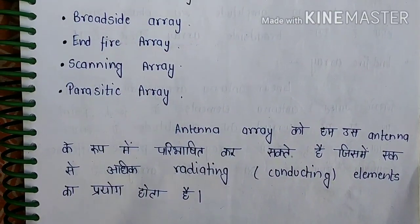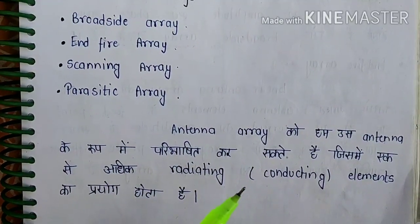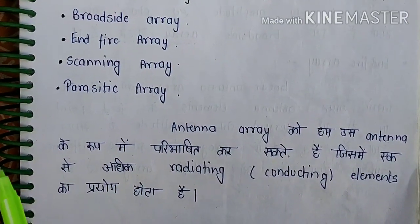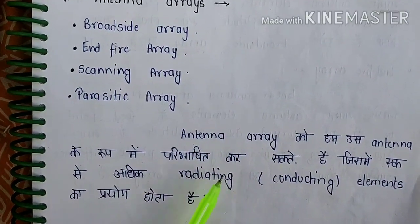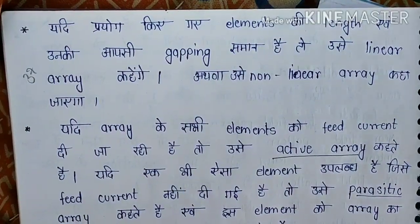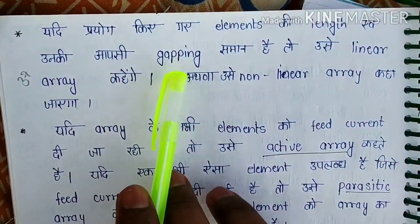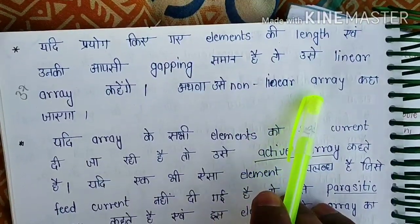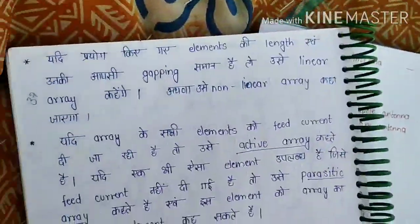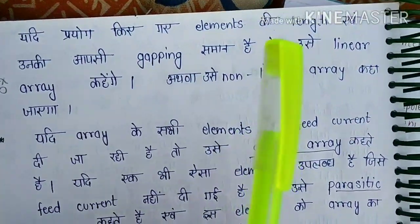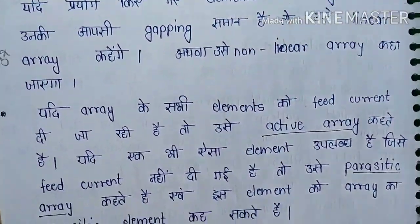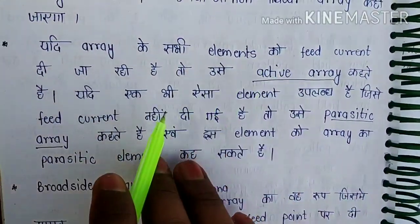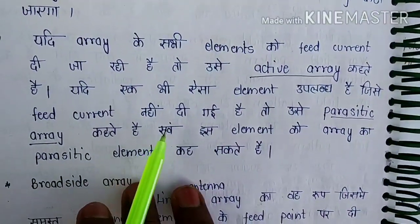A group of antennas means the conducting elements, the radiating elements. An antenna array consists of multiple conducting and radiating elements. If every element is fed current, then we call it an active array. If we don't feed current to one element, then we call it a parasitic array.